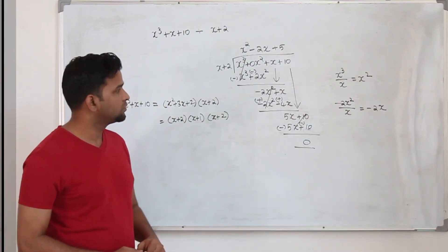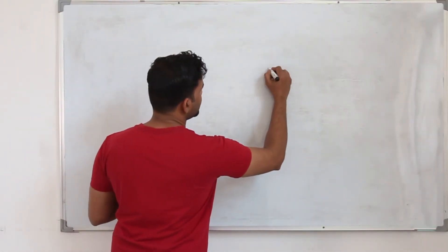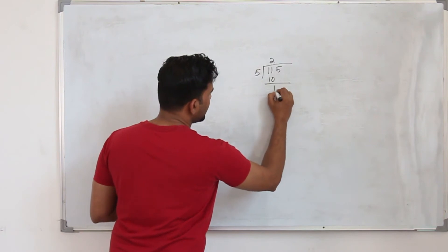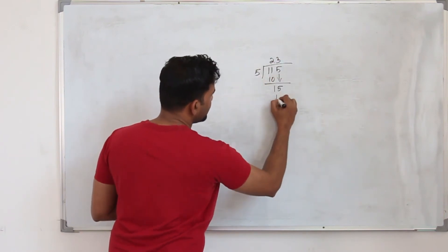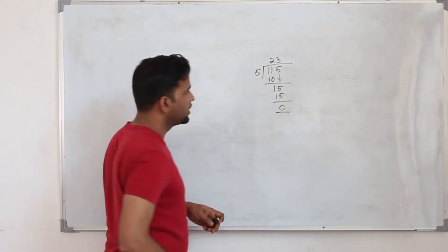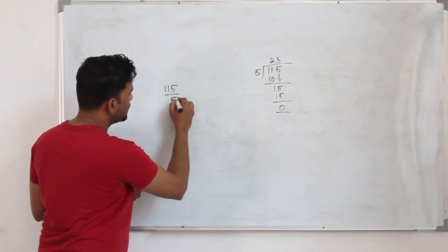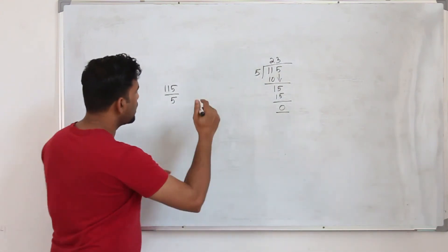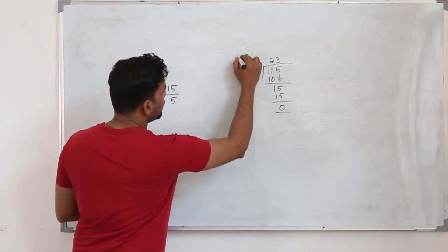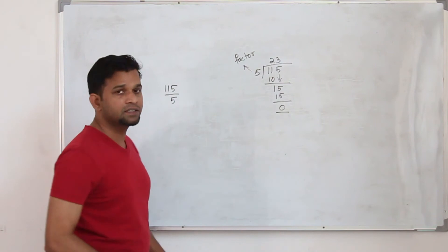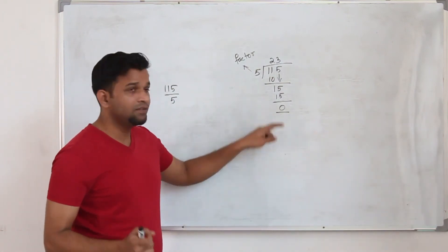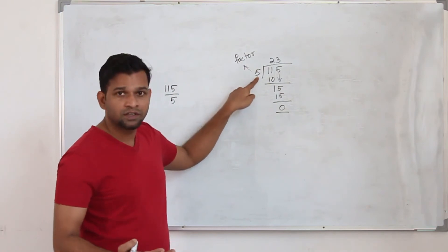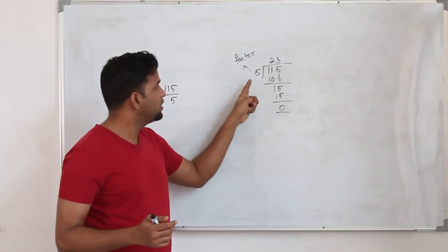When you divide a number — say 115÷5 — the remainder is 0. There is a special name for this: we call 5 a factor of 115, because the remainder is 0. The same thing applies to polynomials: when you divide a polynomial by a linear expression and your remainder is 0, we call the divisor a factor of that polynomial.